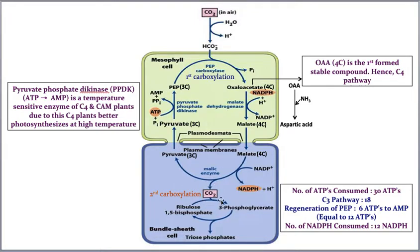The carbon dioxide released in the bundle sheath reacts with ribulose-1,5-bisphosphate (RuBP), converting into PGA (3-phosphoglyceric acid), then into triosephosphate, and ultimately into glucose. This is the C3 cycle, which in C4 plants takes place inside the bundle sheath rather than in the mesophyll.